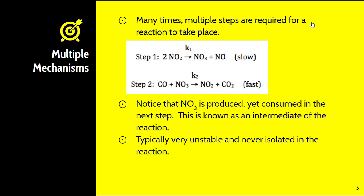Many times multiple steps are required for a reaction to take place. In this reaction, NO3 is produced yet consumed in the next step — this is known as the intermediate. Intermediates are typically very unstable and never isolated in the reaction, so we don't include them in the full chemical equation, but it is important to show them in each individual step of the mechanism.